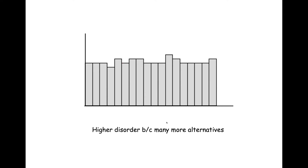Here we have a distribution that has substantial probability mass associated with each value across the support set — it's very close to uniform. If you were to observe a random variable governed by this distribution, you're going to have higher disorder: a plurality of values, more values, different values, because this probability distribution is uniform. The more alternatives you have — be they outcomes or where you place probability mass — there's going to be higher disorder for random variables sampled from this distribution.